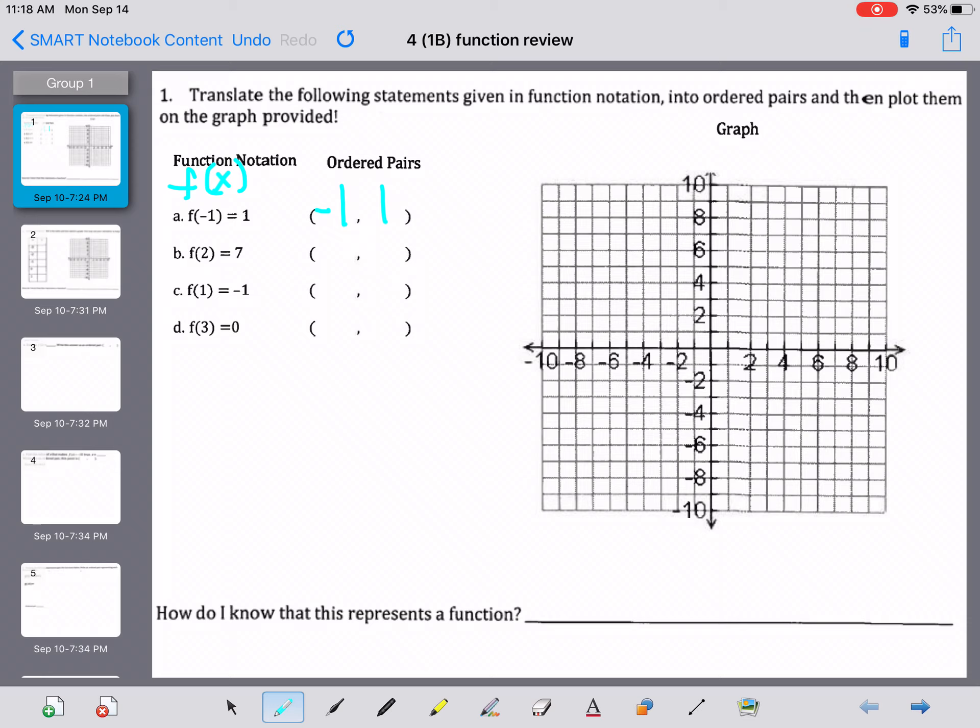So as we take a look at letter B, f of 2, the 2 is the x and the 7 is the y. F of 1 equals negative 1 on problem C, 1 is the x and negative 1 is the y. And f of 3 equals 0, 3 is the x and 0 is the y value. So there's our ordered pairs.